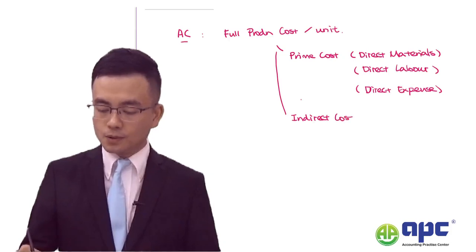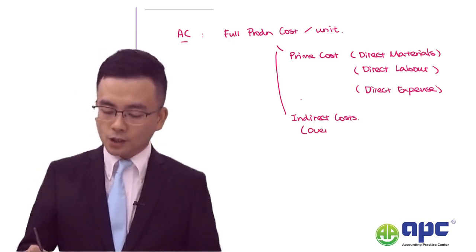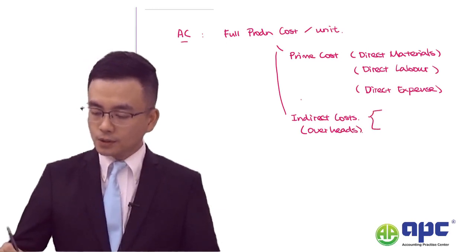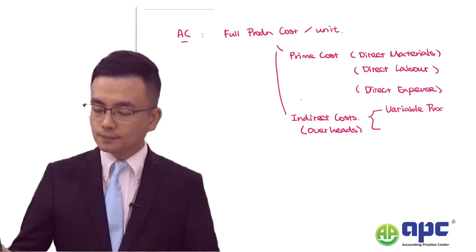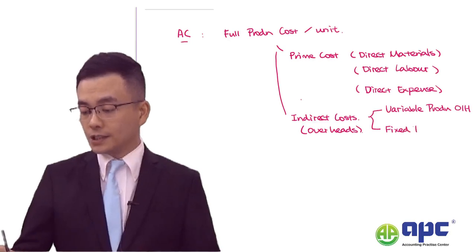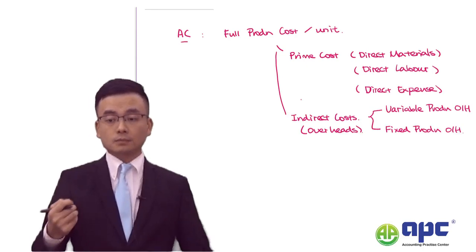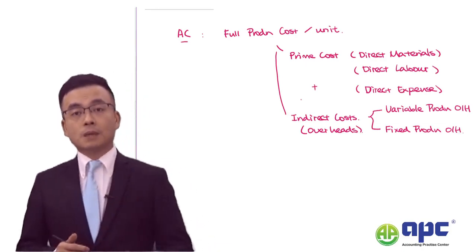That overhead is related to production. It includes variable production overhead and fixed production overhead — for example, the rental rate in our factory. Adding all of these together gives us the full production costs per unit, and this is what absorption costing means.